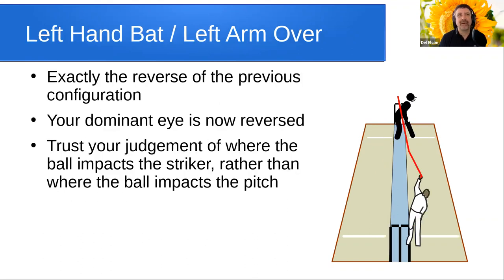Let's reverse that configuration. I've now got a left-hand batter facing a left-arm over bowler — a left-arm bowler bowling over the wicket — and I have exactly the same situation as previously. You can replay this video and go back a few slides to look at the previous discussion. I've now got the left-arm orthodox versus left-arm off-spinner debate about how far the ball is turning. And I also know that my dominant eye is now reversed — so as a right-eye dominant umpire, I am now more certain of the pitch of the ball with this configuration, because it is on my dominant eye side.